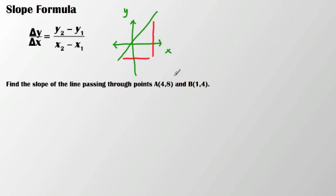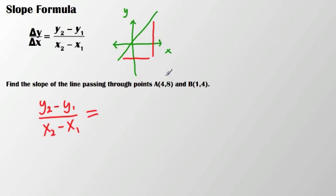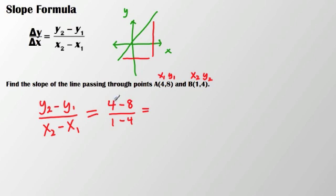So I can find the slope of a line passing through the points (4, 8) and (1, 4). Starting with the formula y₂ minus y₁ over x₂ minus x₁, I label (1, 4) as (x₁, y₁) and (4, 8) as (x₂, y₂). Plugging in, I get 4 minus 8 over 1 minus 4, which is negative 4 over negative 3, so my slope is positive four-thirds.